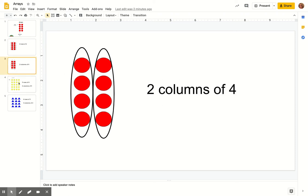Now let's look at our columns. Here are our columns. We have one, two columns, and in each column we have four red dots. Therefore we have two columns of four.